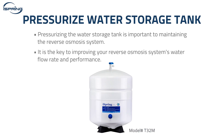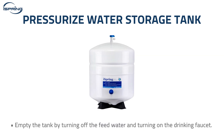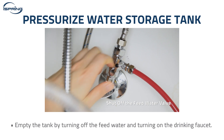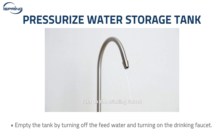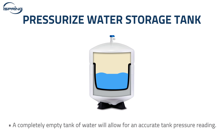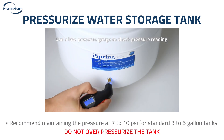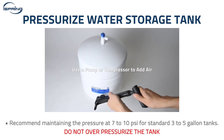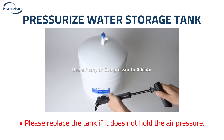Method number two: pressurize the water storage tank. Pressurizing the water storage tank is important to maintaining the reverse osmosis system — it is the key to improving your system's water flow rate and performance. Before pumping air into the tank, please empty the tank by turning off the feed water adapter and turning on the drinking faucet. A completely empty tank will allow for an accurate pressure reading. We recommend maintaining the tank pressure at 7 to 10 psi for common use on standard 3 to 5 gallon water storage tanks. Please replace the tank if it does not hold the air pressure.